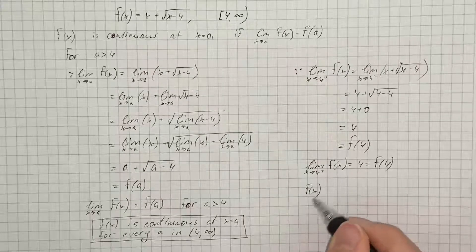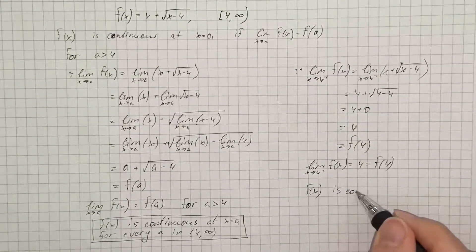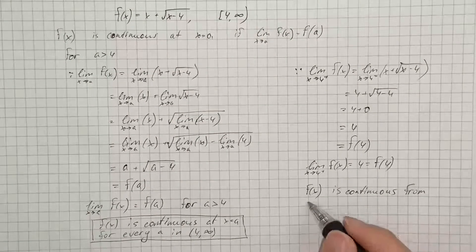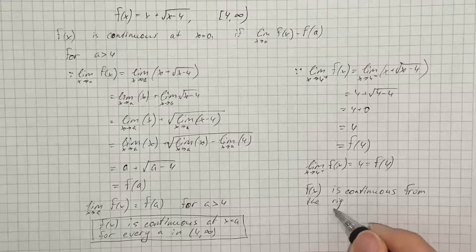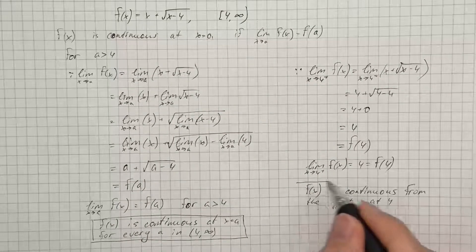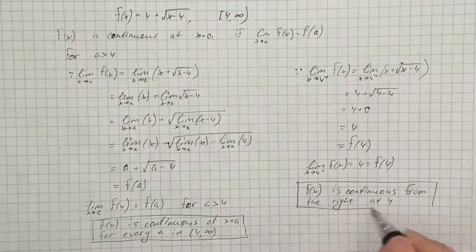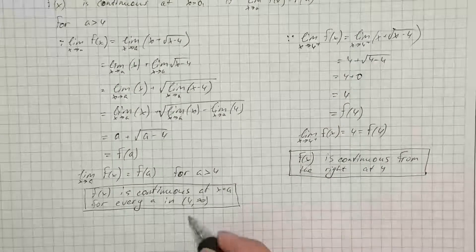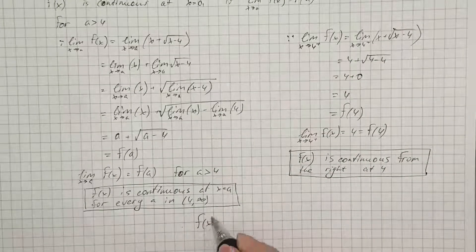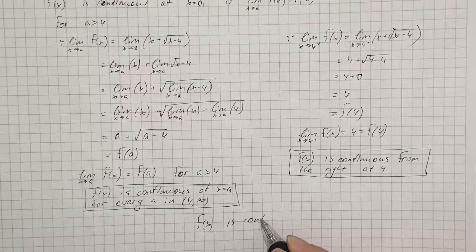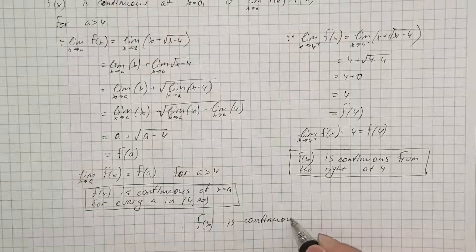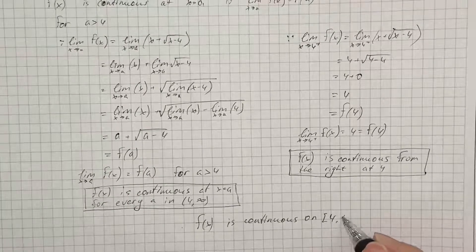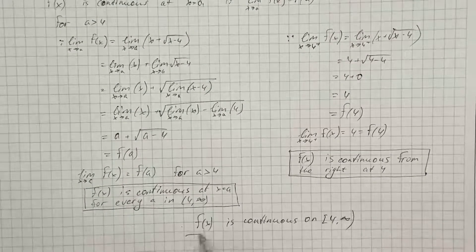So f(x) is continuous from the right at 4. Therefore, we can say that our function f(x) is continuous on the interval [4, ∞). That's our answer.